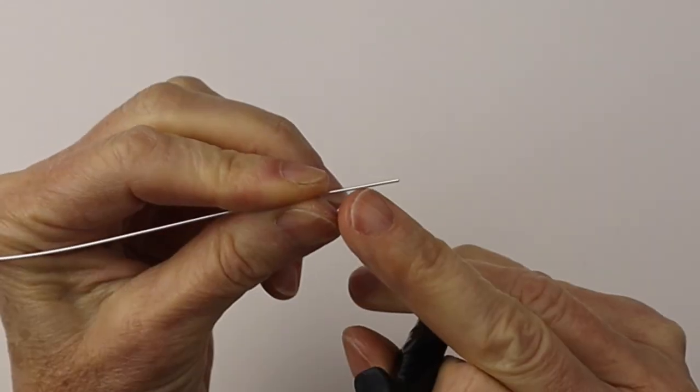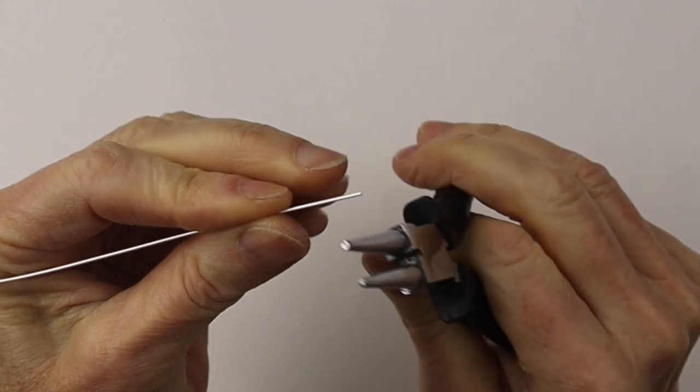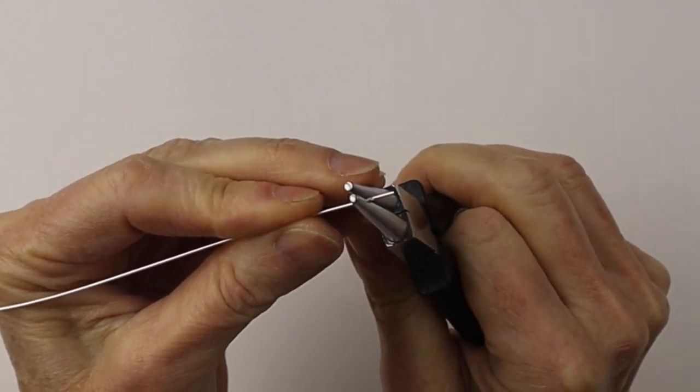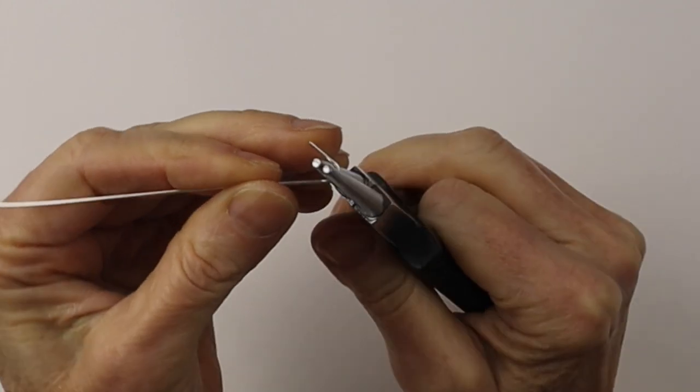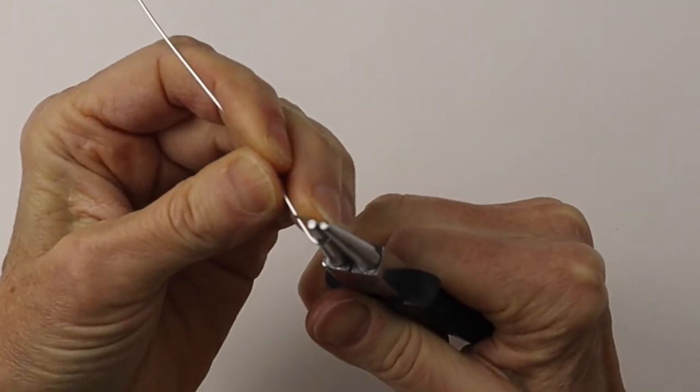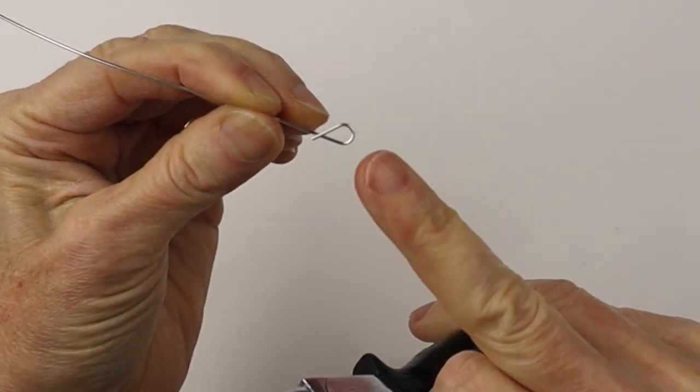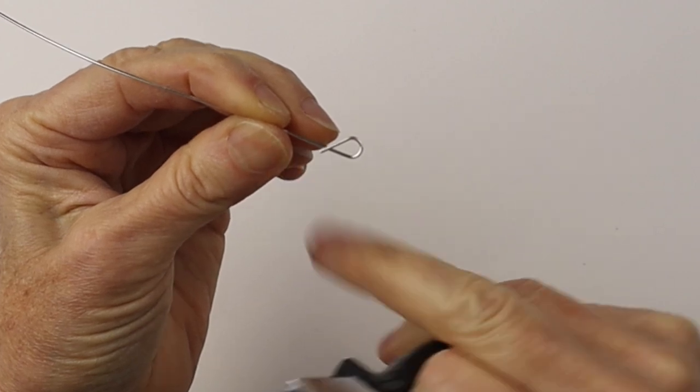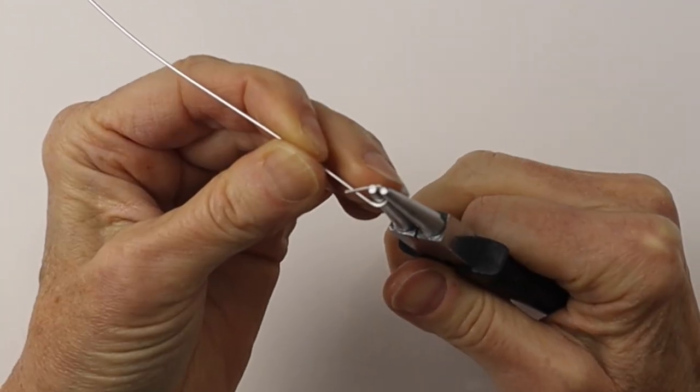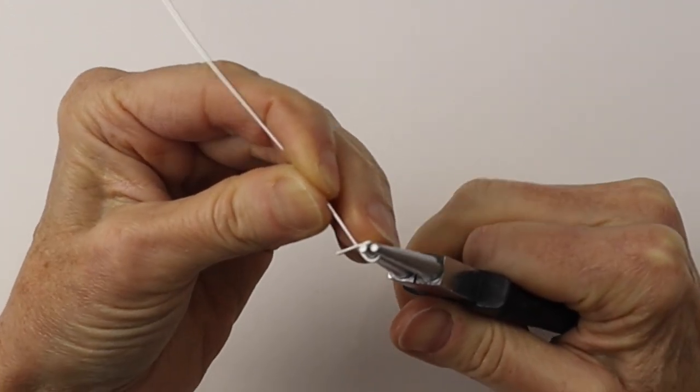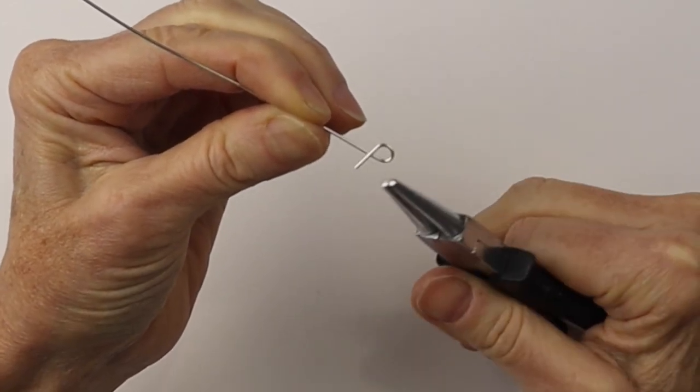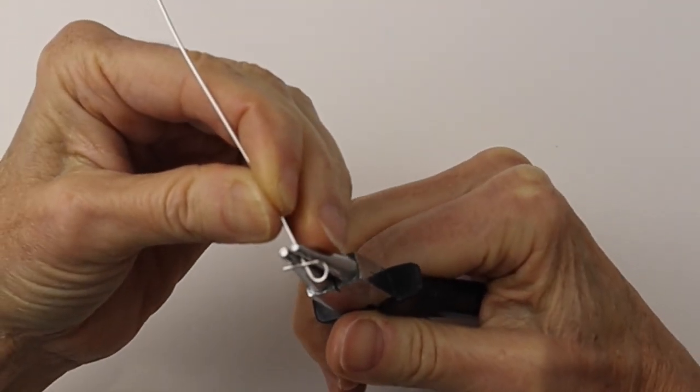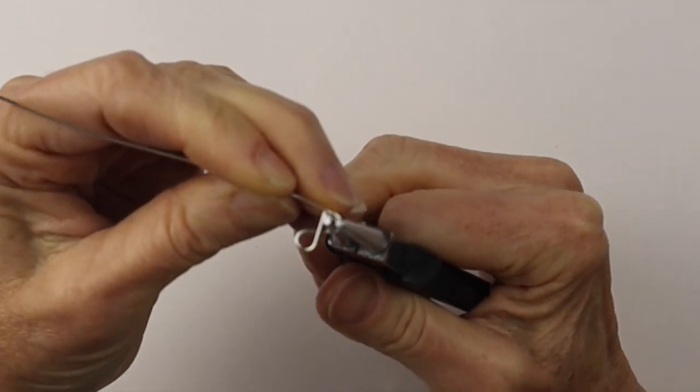We are going to start with 20 gauge wire. I'm using my larger round nose pliers and I am going to start at a certain position in the pliers depending on how big you want the infinity sign. I'm going to just do one little curve to make a teardrop shape.